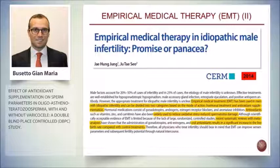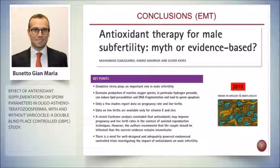More recently, the question was raised: is empirical medical therapy a promise or a panacea? After reviewing many papers, one study concluded that following a recent systematic review with meta-analysis, oral antioxidants result in a significant increase in live birth rate compared with control treatments. This conclusion focuses on live birth rather than just sperm motility and other sperm characteristics — and a 2015 paper summarizes what we know about antioxidants for male infertility today.